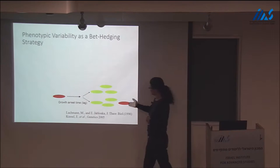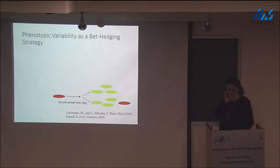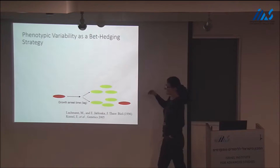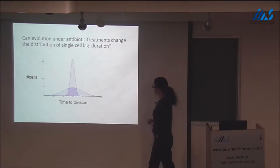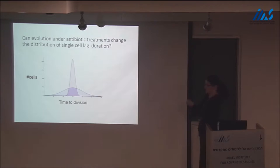One idea is that these non-growing bacteria have evolved under many stresses — for example, phages, heat, or stressful chemical compounds. It's very appealing to think of this as an evolutionary process. But when we observe it, we cannot distinguish whether bacteria that do not grow are just a byproduct of a defective cell cycle, or whether evolution has selected a mechanism to create variability that enables the population to survive. This question was open for quite some time: can an evolution process create variability in a phenotype, and can we prove that this variability is an adaptive process?